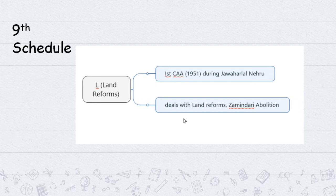The Ninth Schedule was introduced by the First Constitutional Amendment in 1951 under Prime Minister Jawaharlal Nehru. It relates to land reforms - specifically abolishing the zamindari land system that existed during British rule. Land reform is also introduced in the modern history section.